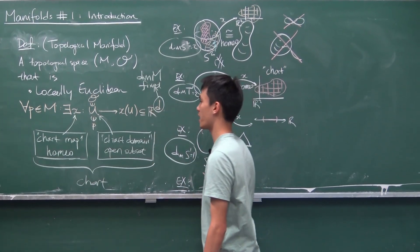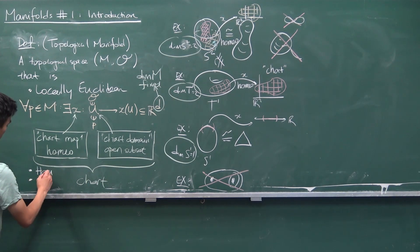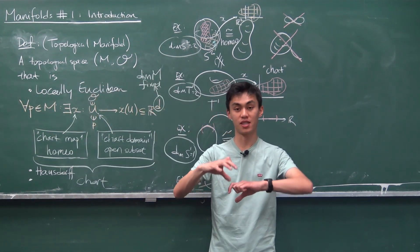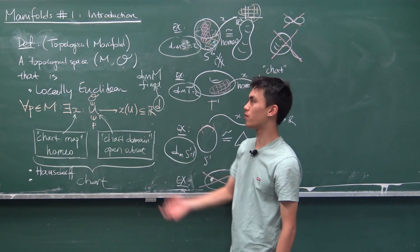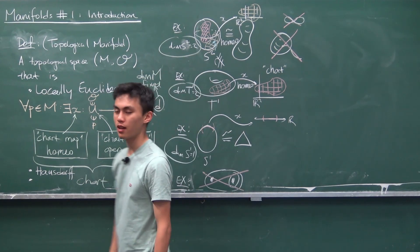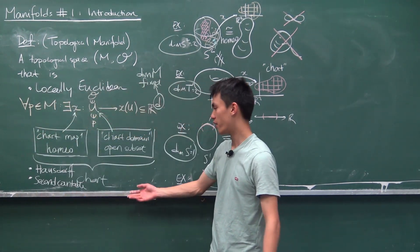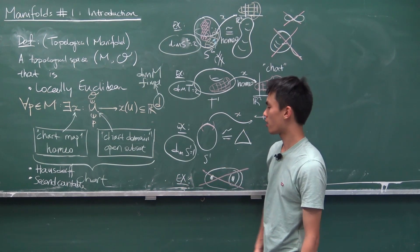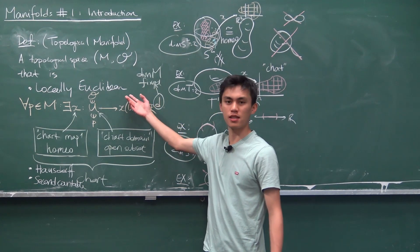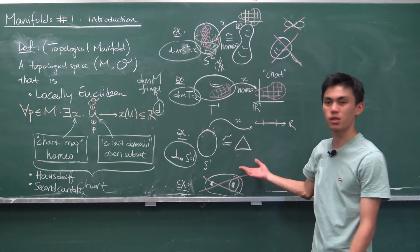Being locally Euclidean is not quite the only condition we need — there are two more. The topological space also has to be Hausdorff, meaning that any two distinct points can be separated by disjoint open neighbourhoods. Without this you get strange examples like the line with two origins. The other condition is second countable, which roughly means the open neighbourhoods can be generated from countably many basis elements. These two conditions are extra constraints we impose to avoid pathological examples, but locally Euclidean is the main property.